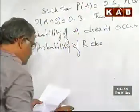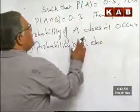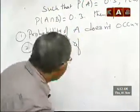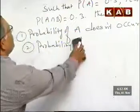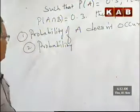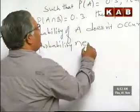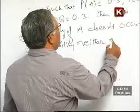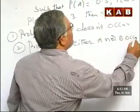The third part: probability of neither A nor B occurring. Let me modify the question here — probability of neither A nor B occur.